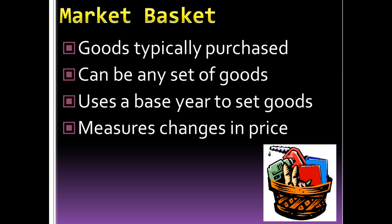When it comes to the market basket, we're talking about a basket of goods that are typically purchased by people. A market basket can be any set of goods that we think are important or relevant to a group of people. The trick is not so much what's in the basket, but that we use a base year to set the amount of goods in the basket, and we use that same set of goods every single year to measure changes in price. For example, a market basket measuring inflation for athletics could include the price of footballs, basketballs, baseballs, and softballs — say two footballs, one basketball, three baseballs, and four softballs. We use that same number of goods every single year, track how much each piece of equipment costs, total up the cost of the basket, and compare that basket from year to year.